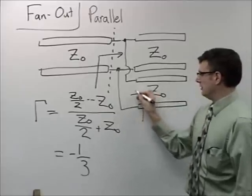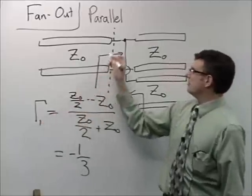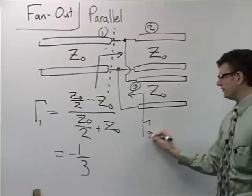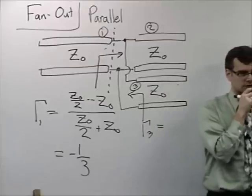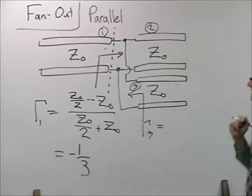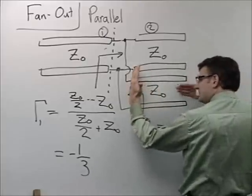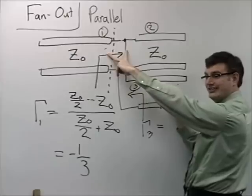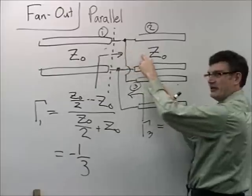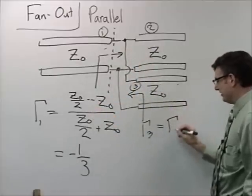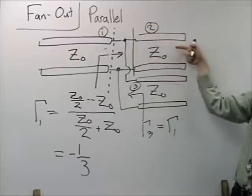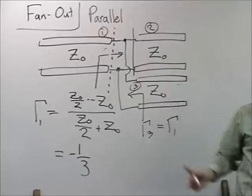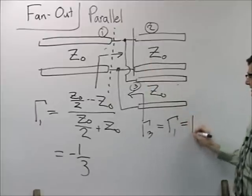The reflection coefficient at the other junctions — looking from one of the output lines back — is the same magnitude. If a signal comes from one output line, it sees the input Z₀ in parallel with the other output line's Z₀, giving Z₀/2 as the load. So no matter which side you approach this junction from, you get the same reflection coefficient of negative 1/3.